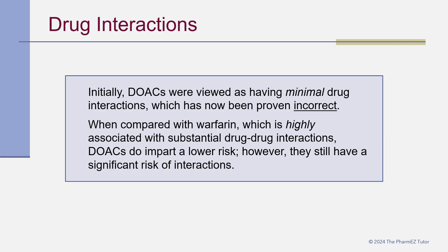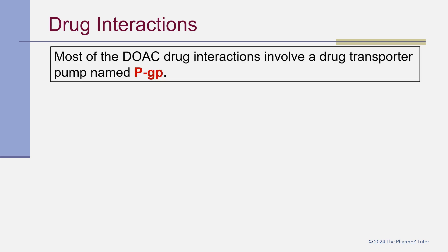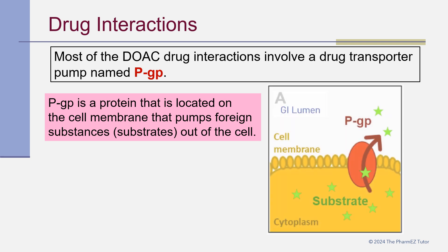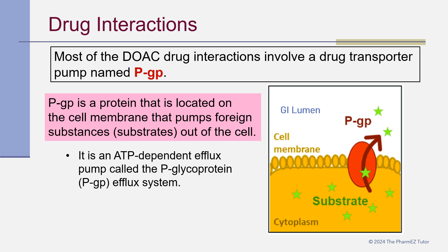Initially, DOACs were viewed as having minimal drug interactions, which has now been proven incorrect. When compared with warfarin, which is highly associated with substantial drug-drug interactions, DOACs do impart a lower risk; however, they still have a significant risk of interactions. Most DOAC drug interactions involve a drug transporter pump named PGP — a protein located on the cell membrane that pumps foreign substances out of the cell. It is an ATP-dependent efflux pump called the P-glycoprotein or PGP efflux system.